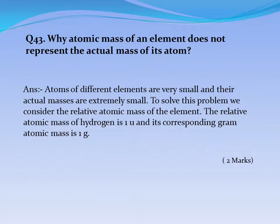Question No. 43: Why does atomic mass of an element not represent the actual mass of its atom? Answer: Atoms of different elements are very small and their actual masses are extremely small. To solve this problem, we consider the relative atomic mass of the element. The relative atomic mass of hydrogen is 1U and its corresponding gram atomic mass is 1g.